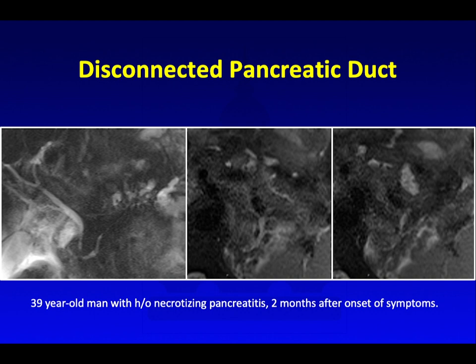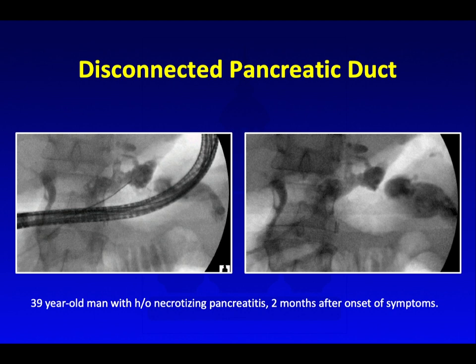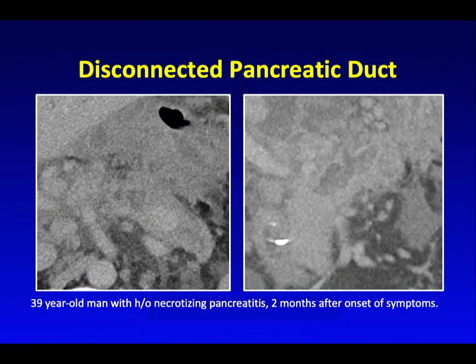In this patient with a history of necrotizing pancreatitis two months after symptoms, on the MRCP image, we can see the pancreatic duct within the head, but more distally within the body and tail, the duct is not well seen, and we see peripancreatic collections. It is very difficult to make the call of a disconnected pancreatic duct on MRCP alone. On ERCP after injection, they saw a very irregular tubular collection interpreted as the dilated pancreatic duct. The patient also underwent CT, and on CT we have limited ability to evaluate the pancreatic duct, making it very difficult to determine whether the collection is connected to the duct.